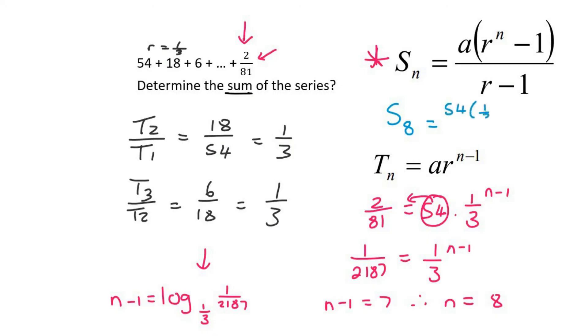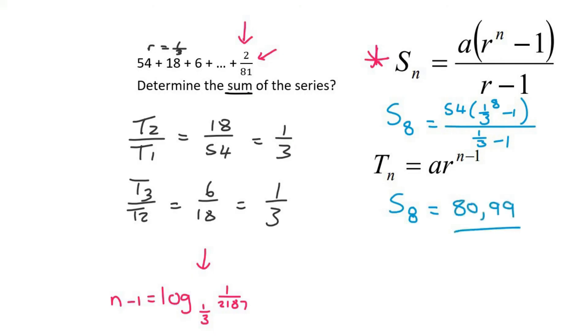We have 8 terms and then you just type it on the calculator. And so the final answer is going to be 80.99 if you round to two decimal places.